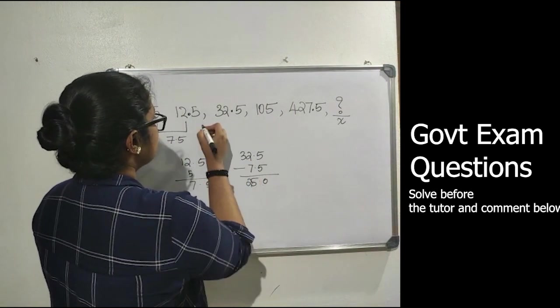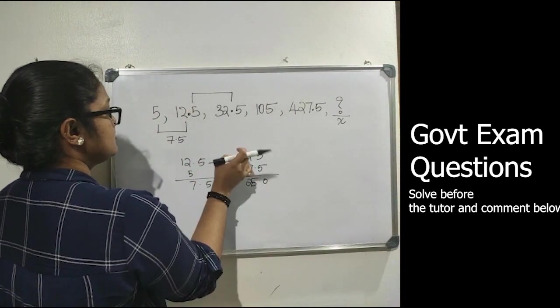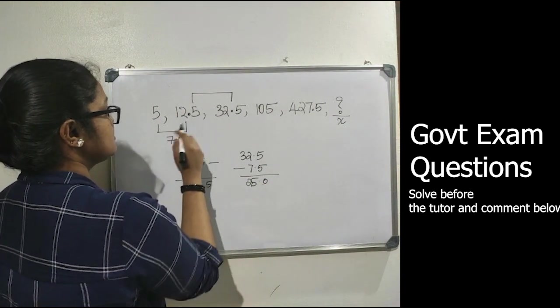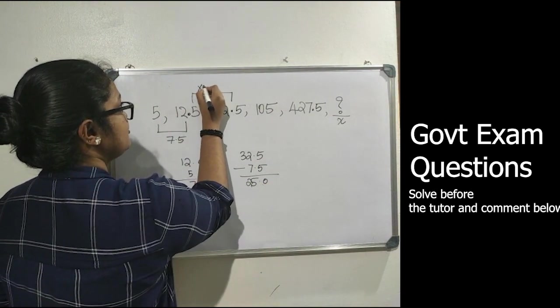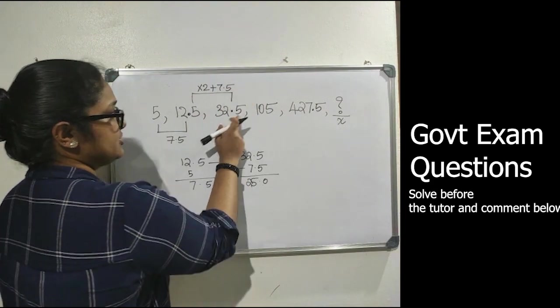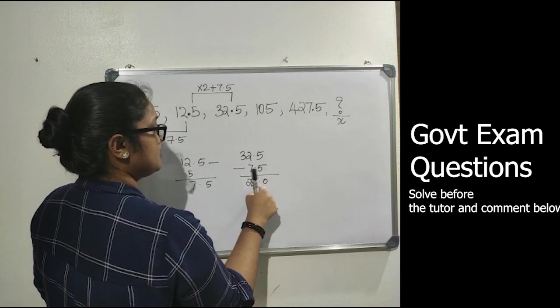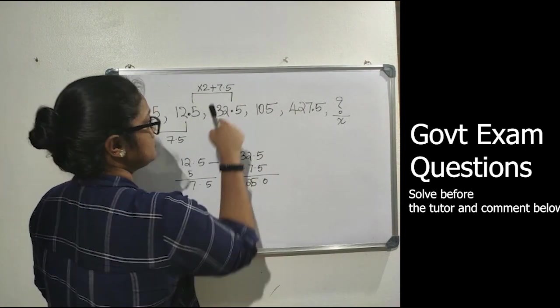That gives us 25. Let's try to find a relation between these numbers. 12.5 into 2 plus 7.5 equals 32.5. So 12.5 into 2 equals 25, 25 plus 7.5 equals 32.5.